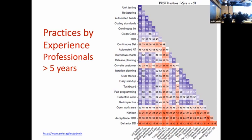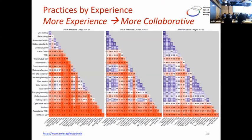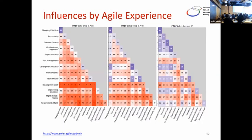For professionals with more than five years of experience, agile collaboration practices are significantly more developed. Things still challenging are Kanban and test-driven design — these are quite difficult as newer processes. Looking at the flow across experience levels: technical practices dominate early; by mid-career, proficiency is well established; by five or more years, more advanced agile practices are well adopted. Business influences like productivity, IT-business alignment, development processes, risk management, and release management are all much more proficient with experience compared to graduates with less than two years.